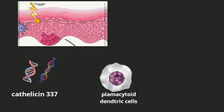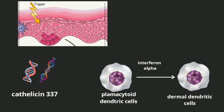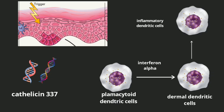This interferon alpha then acts on the myeloid dendritic cells, which are already resident in the dermal skin. An important point is that dermal dendritic cells are very plastic — they change into different forms. In psoriatic skin lesions, they change into inflammatory dendritic cells, which produce a lot of pro-inflammatory cytokines that I'll discuss later.